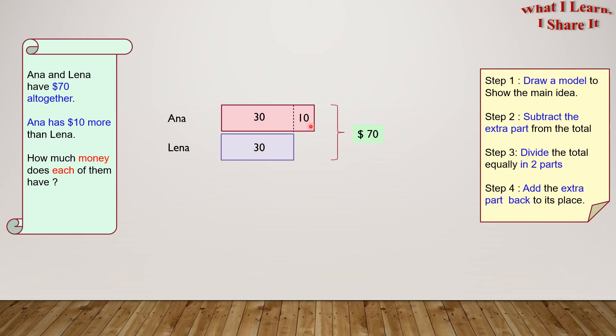And now the final part is to put the extra $10 back in Anna's box. And here it is. This gives us a total of $70 again, since we added it. And this gives us a total of $40 for Anna. So, Anna has $40, and Lena has $30.